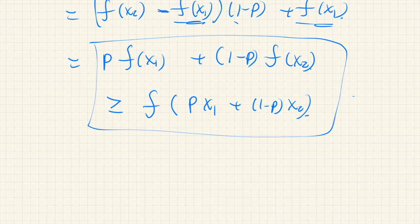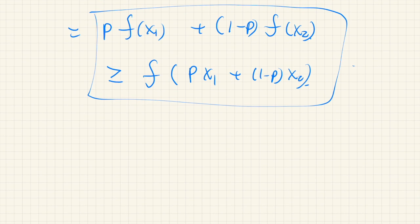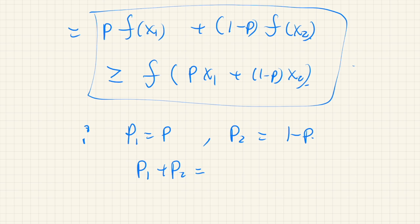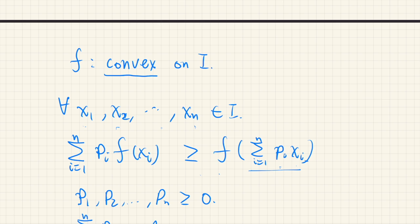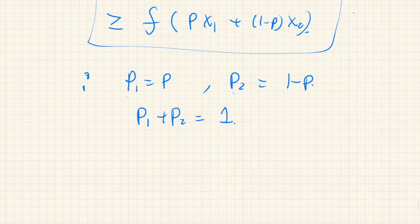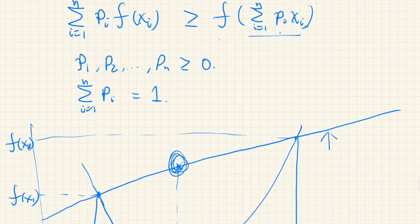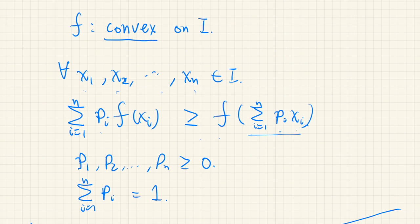If we write p1 = p and p2 = 1-p, then p1 + p2 = 1 and both are non-negative. So this is a special case of Jensen's inequality with just two points. Jensen's inequality with n stopping at 2 is exactly this. So we can use mathematical induction to prove the general case.